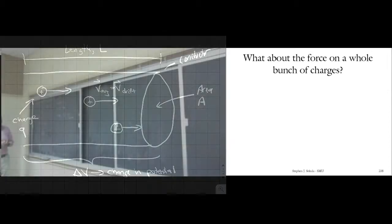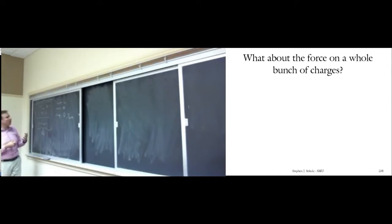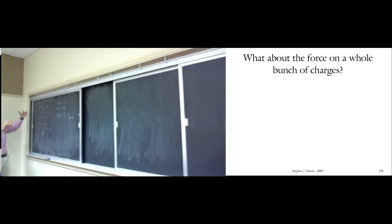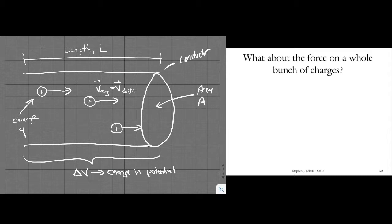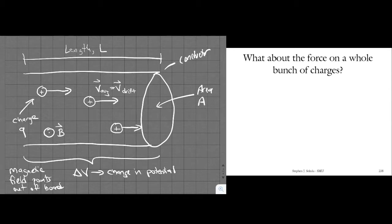Now let's imagine we expose this bunch of charge to an external magnetic field — we immerse the conductor in it. I'll say the magnetic field points out of the board, so arrows coming out at you. This is B, and it's everywhere, uniformly enveloping this entire material, so every charge in here encounters a magnetic field pointing out of the board.